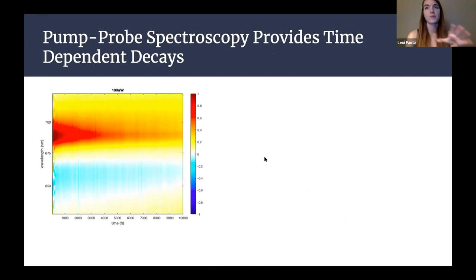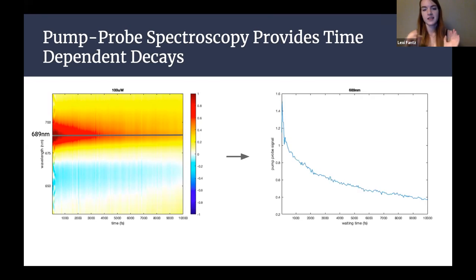Here we have a pump probe spectrum which compares the intensity of absorbance over time versus wavelength. We're then able to find the highest intensity portion of this graph which is in this case at 689 nanometers and then we take this line and turn it into a different graph which is our intensity versus time. We can see the decay of the signal over time and this was just one that was done at a lower power but we can also plot multiple powers over time and see the difference there.